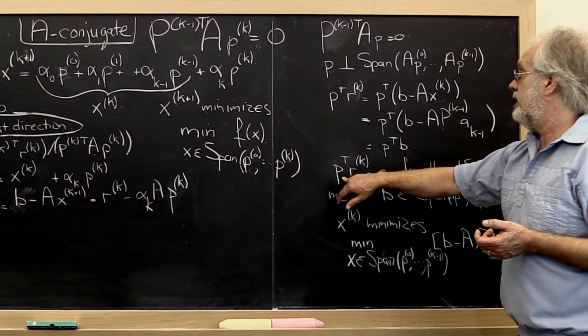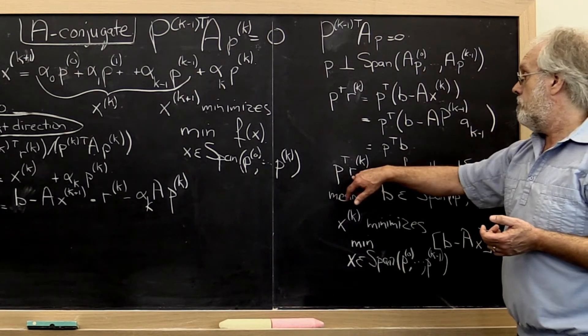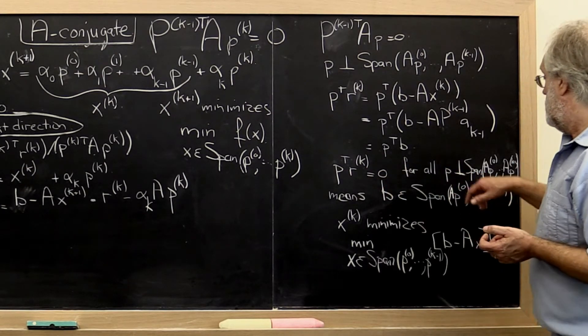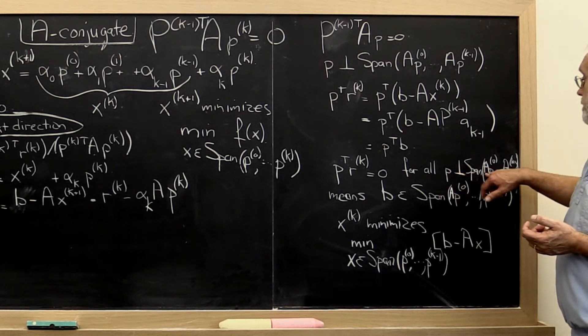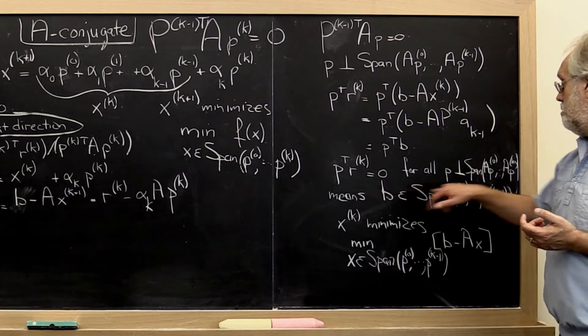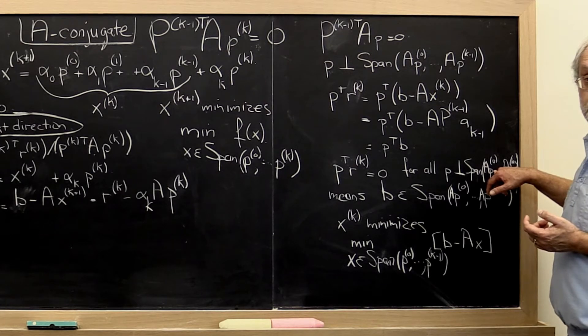If all P that are A conjugate to the previous search directions are perpendicular to the current residual, then notice that because P is perpendicular to the span of the span of these A, P, zero, et cetera, vectors, inherently then B must actually be in that space, that span.